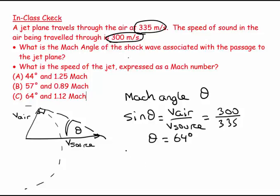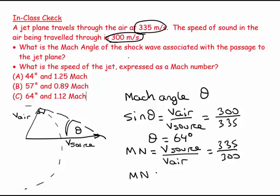And then my Mach number is equal to the ratio between what you're travelling at — V_source over speed of sound in air — which equals 335 over 300. So my Mach number is equal to 1.12, which we can call 1.2 Mach.